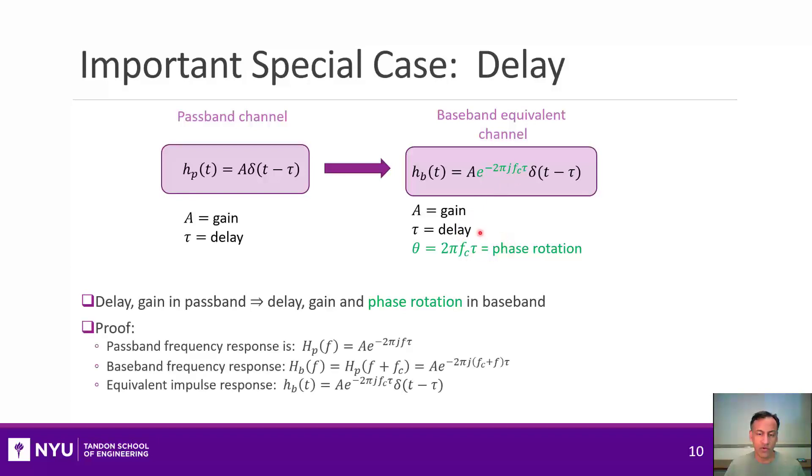Now, just to prove this, let's do the following. So if we had a passband channel impulse response, its frequency response would just be the Fourier transform of this, which will just be a complex exponential. And then if I take the baseband channel response, all I do is I shift that to the left, which is I just get this formula here. But all you do notice here is that I can look at this e to the minus 2 pi j fc tau, and that's just a constant. So I can pull that out and then take the inverse Fourier transform and get back this delta. So the upshot of all of this is that if you have a delay and gain in passband, you have a delay and a gain and a phase rotation in baseband. And the amount of that phase rotation will be proportional to the product of the carrier frequency and the delay.